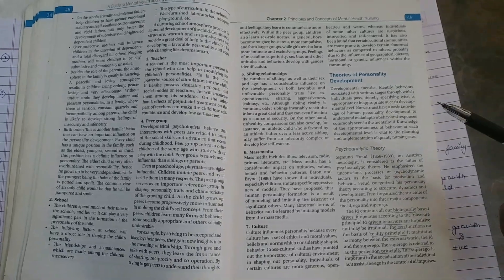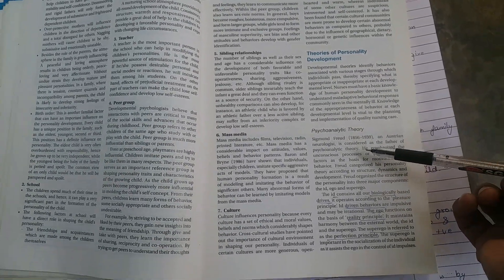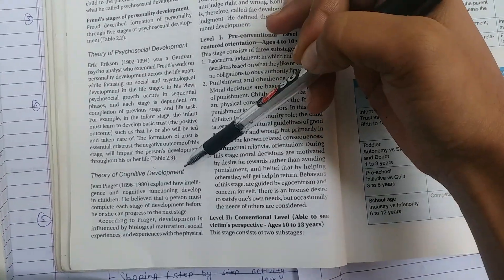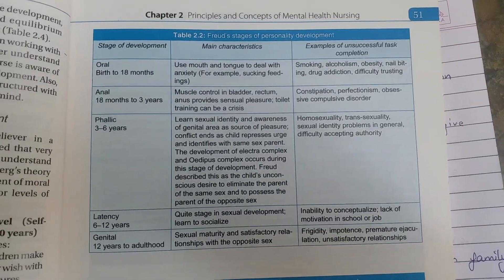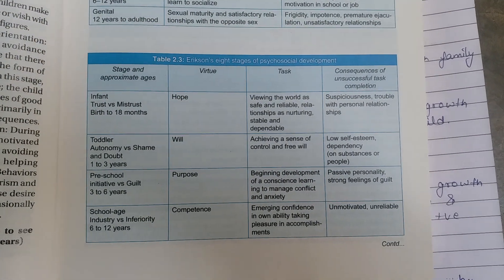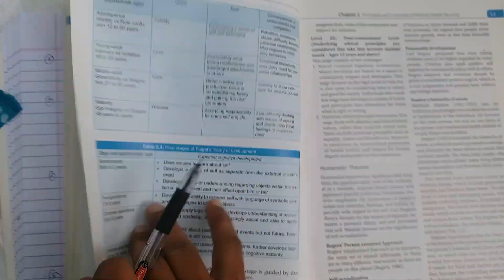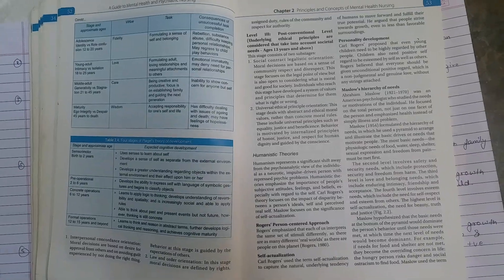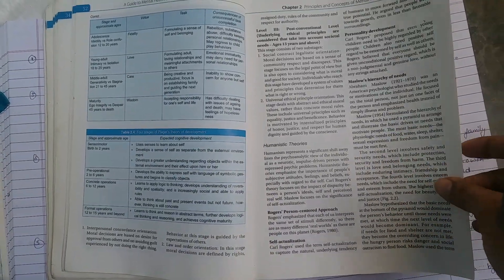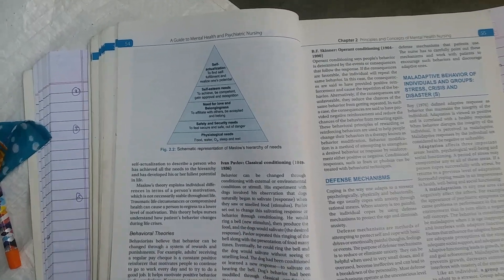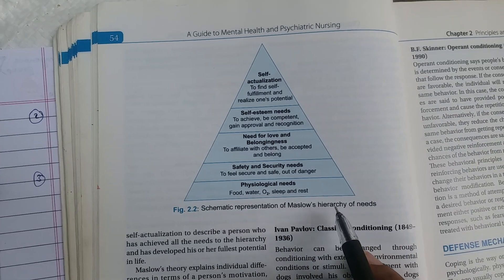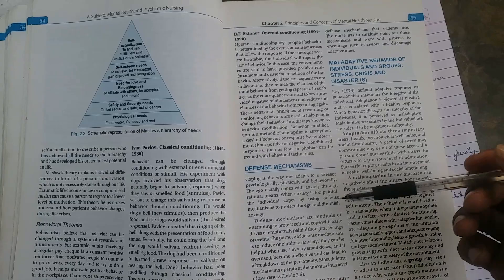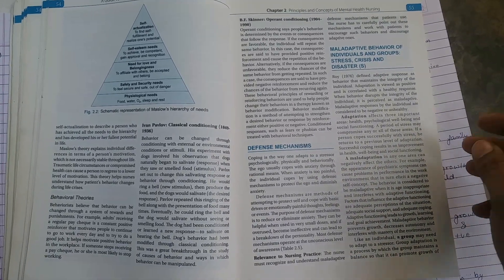Theories of Personality Development include the Psychoanalytical Theory, Theory of Psychosocial Development, Theory of Cognitive Development, Theory of Moral Development, and Freud's Stages of Personality Development. Erikson's Eight Stages of Psychosocial Development, Piaget's Four Stages of Cognitive Development, Humanistic Theory, and Behavioral Theory are also covered. Maslow's Hierarchy of Needs, Defense Mechanisms, Maladaptive Behavior of Individual and Group, Stress, Crisis, and Disaster are included.